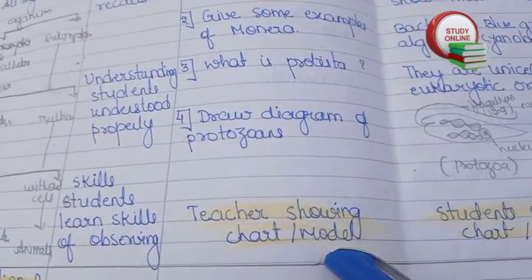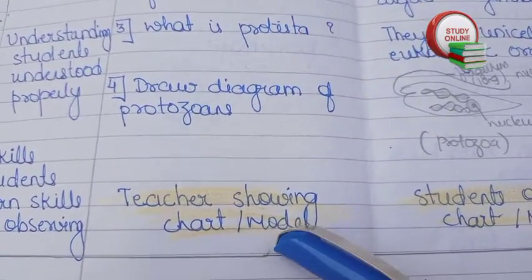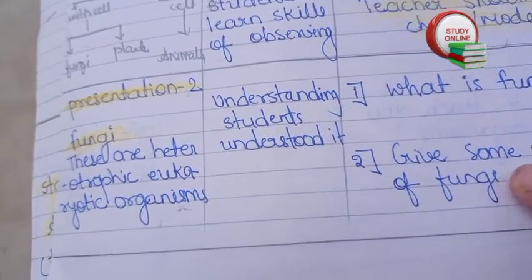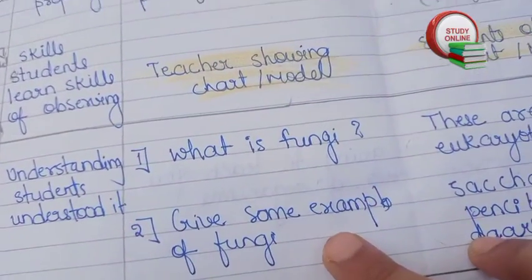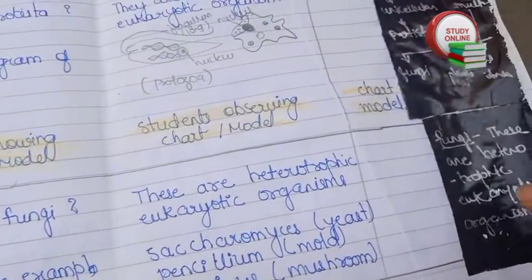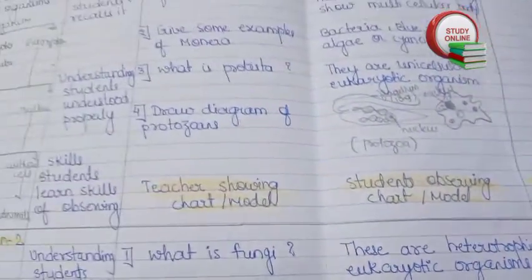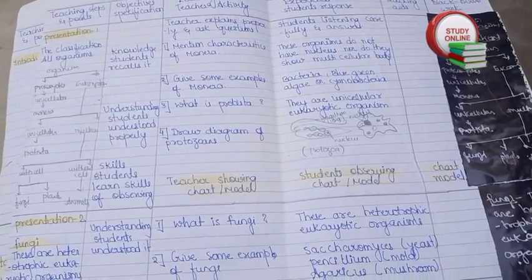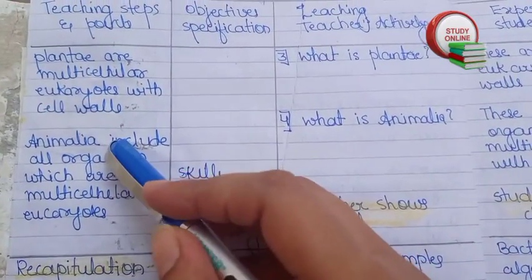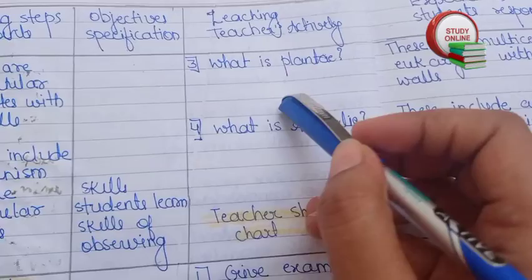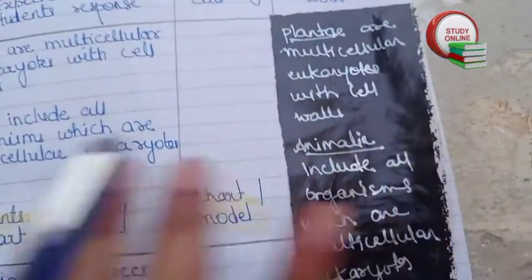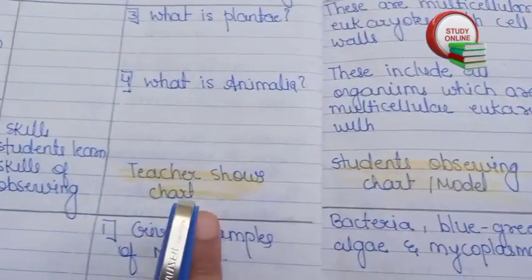After explaining properly, we also have to use a chart or model. In presentation two, you can see questions related to that, all the answers, and the blackboard work — this is the overall look. Here you can also see what Plantae is, what Animalia is, the answers, and the blackboard work.